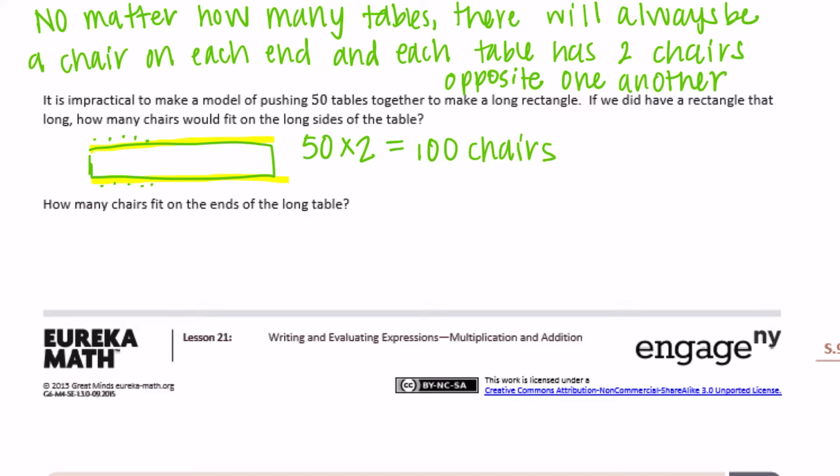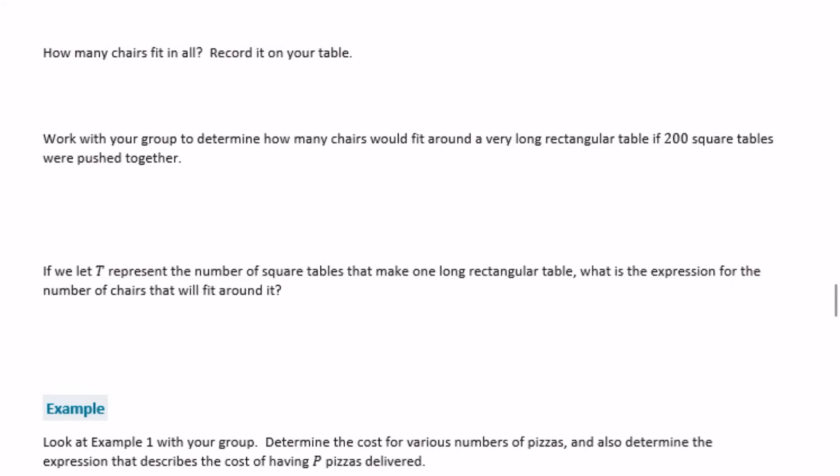How many chairs fit on the ends of the long table? So no matter how many tables we push together, there's only going to be two ends, right? So there's going to be one chair on each end, so two chairs. One on each end. So it doesn't matter if we have two tables pushed together or a thousand tables pushed together, there's only going to be two ends. How many chairs fit in all recorded in your table? So we've already done that in our table. So that would be 100 plus two would be 102 chairs.